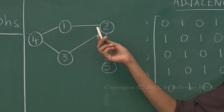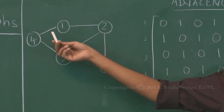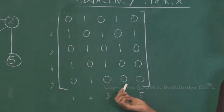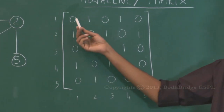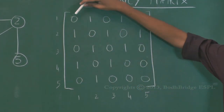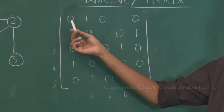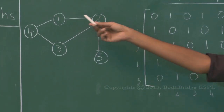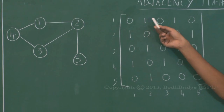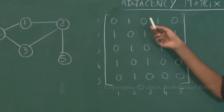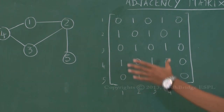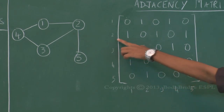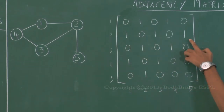If 1 is adjacent to 2 then 2 is also adjacent to 1. The diagonal elements will all be zero because of the assumption that vertex A is not adjacent to itself. As we saw in the graph, vertex 1 is adjacent to 2 and to 4, so positions (1,2) and (1,4) are 1 and the others are 0. Similarly, 2 is adjacent to 1, 3, and 5, and we fill in the adjacency for the rest of the vertices.